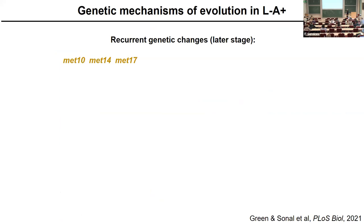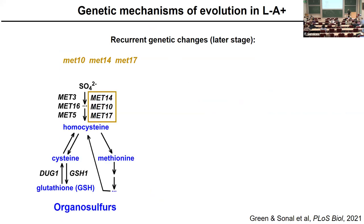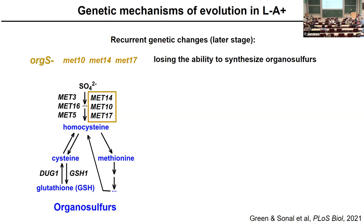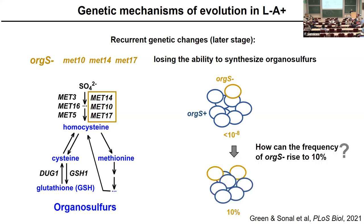At the later stage of this evolution, very surprisingly, we see the emergence of auxotrophic mutations. Yeast can reduce sulfate and conjugate reduced sulfide onto organic carbon backbones to form organosulfurs. These mutations block the synthesis of homocysteine, and since different organosulfurs are interconvertible, these cells cannot grow because they cannot make their own organosulfurs — we call these orgs minus mutants. This is very surprising because the fraction of such mutants would normally be less than one in ten-to-the-eighth, but experimentally we observe them rising to 10%.